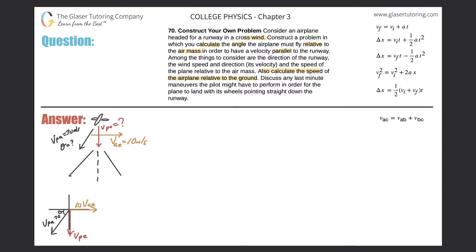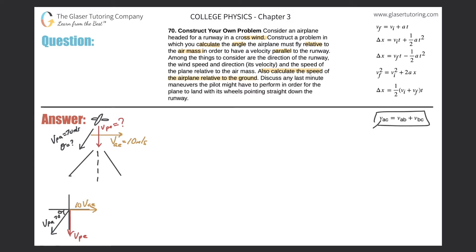Since this is a relative velocity problem, we need to locate the resultant first — it is the velocity of the plane relative to the earth, which is the vector in between the two others. Using the relative velocity formula: the velocity of the plane relative to the earth equals the velocity of the plane relative to the air plus the velocity of the air relative to the earth.